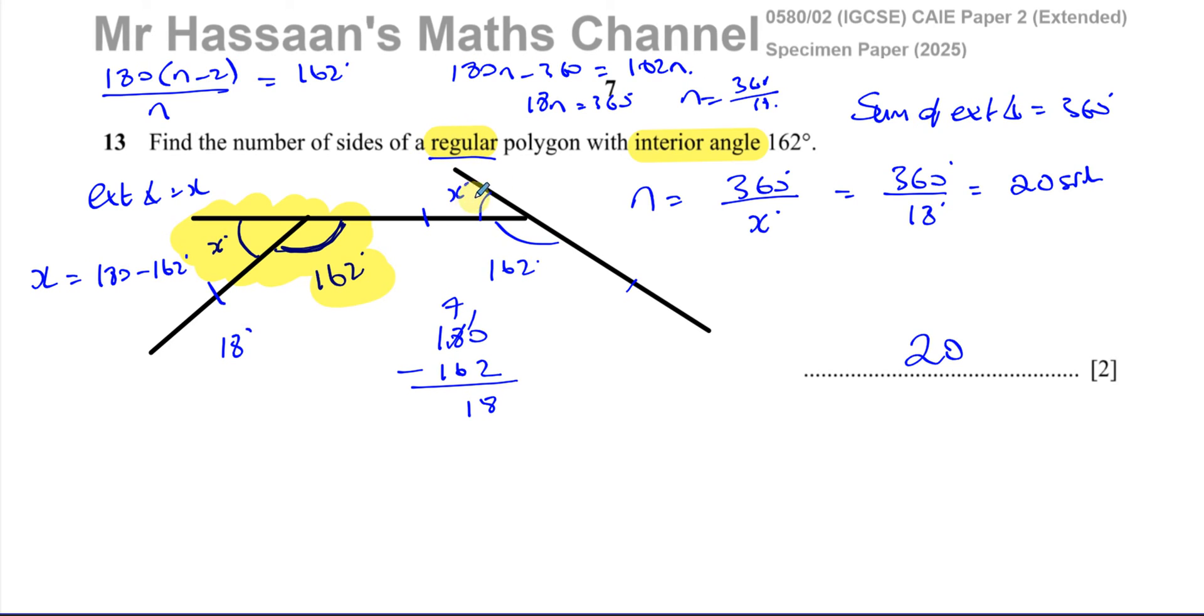We're dealing with a regular polygon, so all the angles are the same. So there's your answer to question number 13 from this paper. Other questions from this particular paper can be found in the playlist. The link will be linked over here.